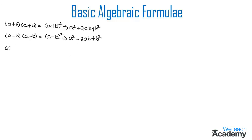So if we consider the product (a + b) into (a − b), what would the formula be? Let us now derive a formula for (a + b) into (a − b). First, let us multiply the individual term a with the group (a − b), and then b with the term (a − b).